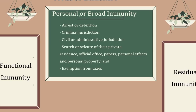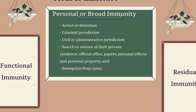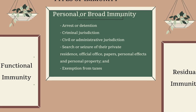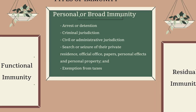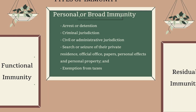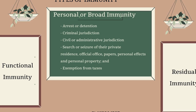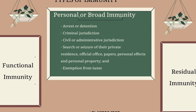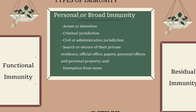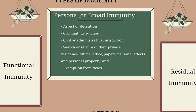Another category of individuals who enjoy immunity are experts on mission. Now let's take a look at types of immunity. We did state that the categories of individuals just mentioned enjoy varying degrees of immunity. First off, we have what is referred to as personal immunity. This is usually attached to heads of states, senior officials, state representatives, or diplomats. It is sometimes referred to as broad immunity.